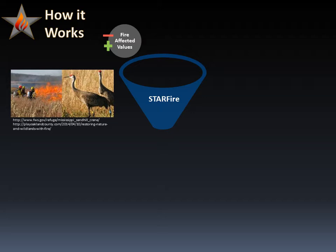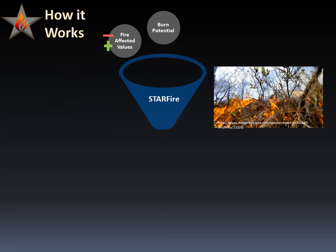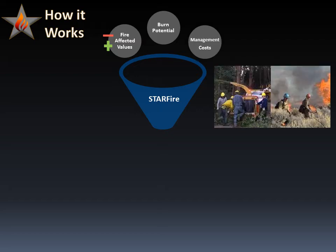The second input, burn potential, is generated from fire behavior information. The final input, management cost, considers the cost associated with treating different vegetation types.